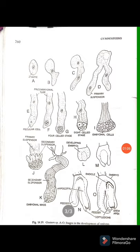In most Netum species, the terminal part of the suspensor tube forms the embryonal mass, also known as the pro-embryo, as seen in figure I. A few cells of this pro-embryo lying toward the primary suspensor start to elongate, developing the secondary suspensor, as seen in figures J and K.